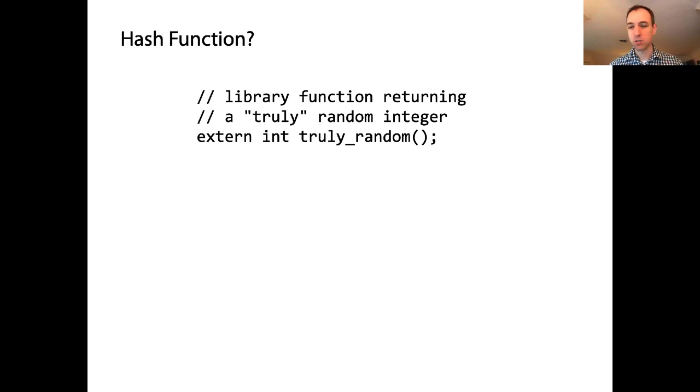And it's returning a random integer. So here's our library function truly random. And let's say my proposal for what our hash function should be. So here's our hash function. It takes an integer as a parameter. It returns an integer, which is going to be the bucket, the offset of the bucket to which item x has been assigned. And I'm simply going to return truly random.